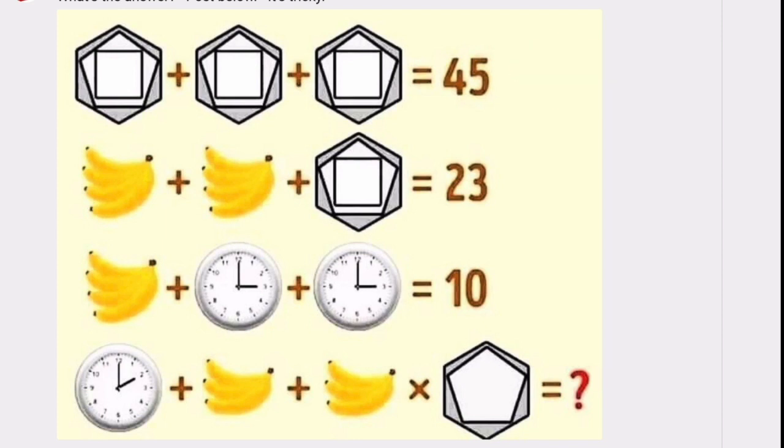Let's start with the first line. Something plus something plus something, three identical things equals 45. So at first glance, you would say, each of these is 15. And that's true, except that the 15 is derived a different way.